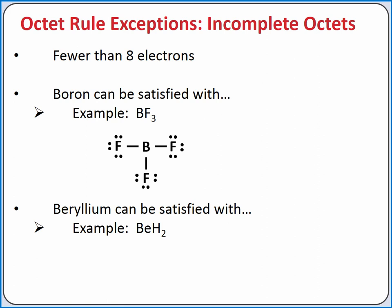Beryllium is satisfied with just 4 electrons. In BeH₂, for example, there are only a total of 4 valence electrons, and these go to create our 2 single bonds. Generally, compounds with incomplete octets are also more reactive.